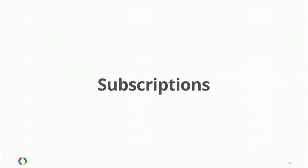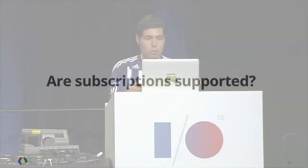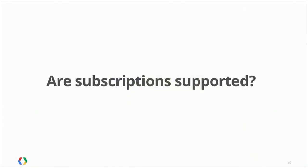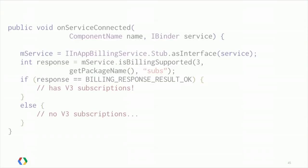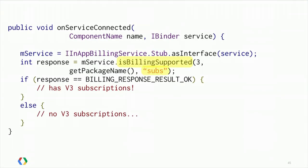Now let's talk about subscriptions. In v3, they're actually pretty simple. In v2, there were a whole bunch of messages, callbacks, and broadcast receivers you had to write to know the status of a subscription at any given time. But in v3, subscriptions are much easier — they're actually just like items. To check if subscriptions are supported, you call the isBillingSupported API and pass 'subs' instead of 'inapp.' Launching the purchase flow for a subscription is similar to a regular item — just use getBuyIntent, but pass 'subs' as the item type, and you get an intent you can launch.